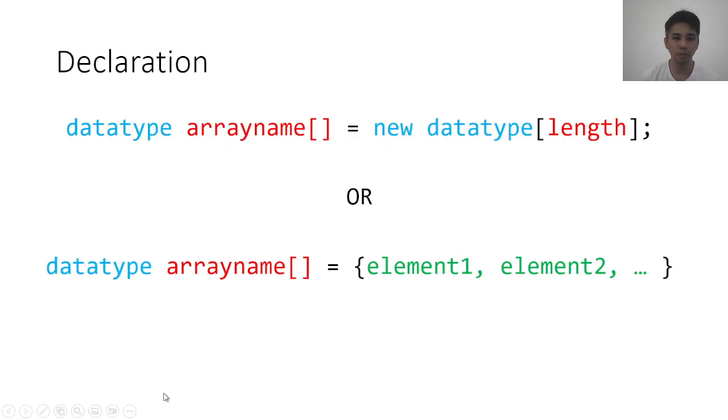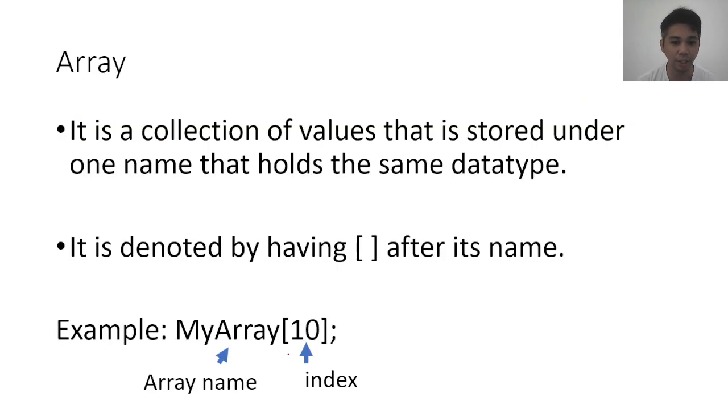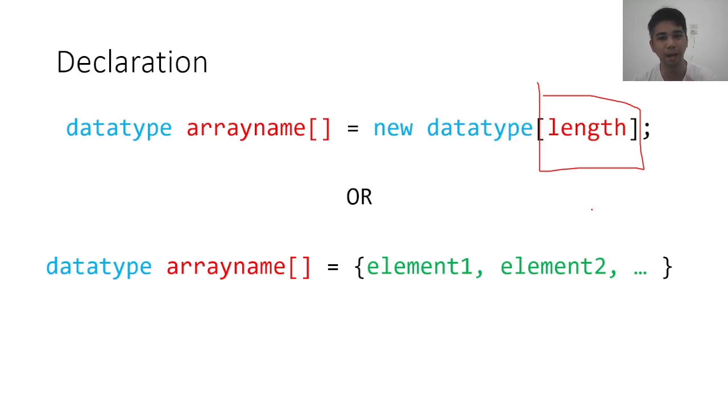So to declare an array, we will be using this command. Either you use the keyword data type, followed by the array name, and then the brackets, it will get a new data type, and then length. In this case, the length here, it's not the index. Earlier, I said this is the index, right? We will cover it later on, but for now, in declaring arrays, the one inside the brackets is actually the length. So what is the length? It's how many items an array can take. Or you can also use this syntax data type, followed by the array name, and then the brackets, and it will get the actual elements. So let's look at some examples on how to use this one and this one in declaring.